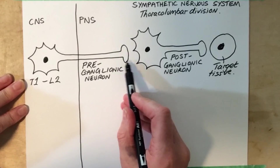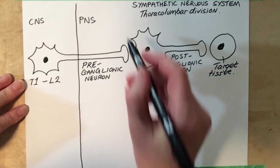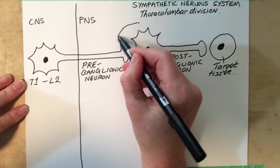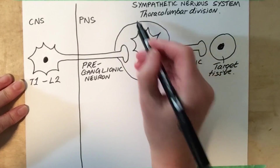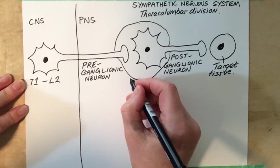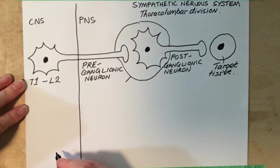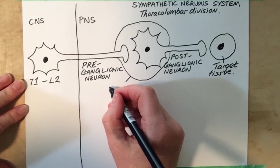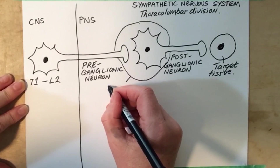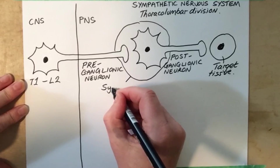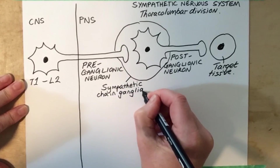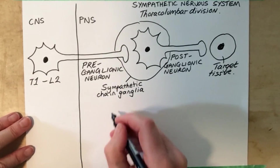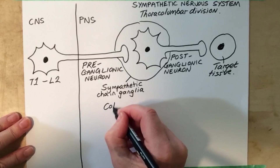The region where the pre- and postganglionic neurons synapse is termed a ganglia. There are two types of ganglia within the sympathetic nervous system: something called the sympathetic chain ganglia, and another type called the collateral ganglia.